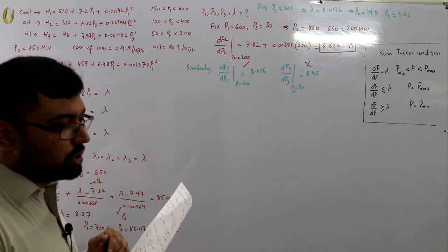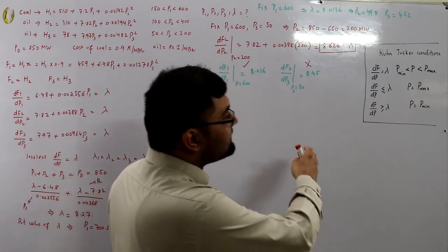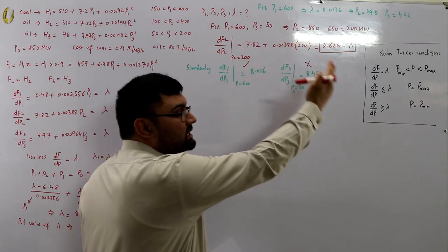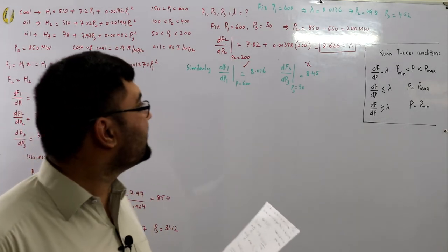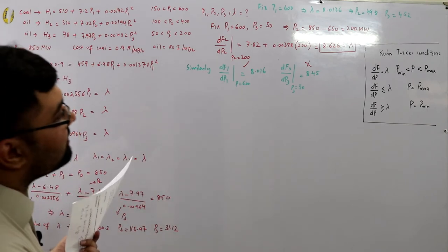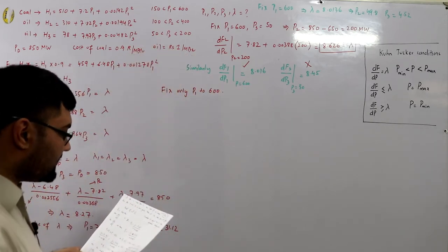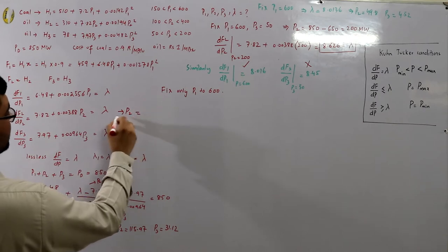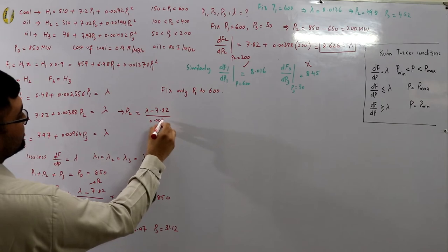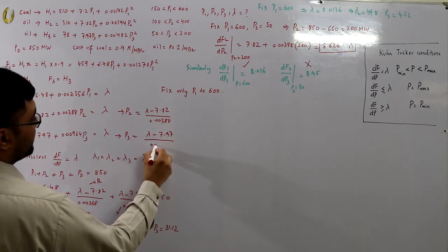Since the Kuhn-Tucker condition for p3 at minimum is not satisfied, we only fix p1 = 600 MW and leave p2 and p3 free. From df2/dp2 = λ: p2 = (λ − 7.82)/0.00388. From df3/dp3 = λ: p3 = (λ − 7.97)/0.00964.